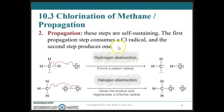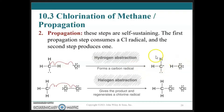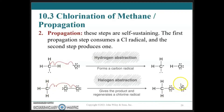In the propagation step, we have no net change in the number of radical species. In the first propagation step, we start with one radical species and end with one radical species — no net change. The identity has changed, but the number hasn't. Similarly, in the second propagation step, we have one radical at the start and one at the end.